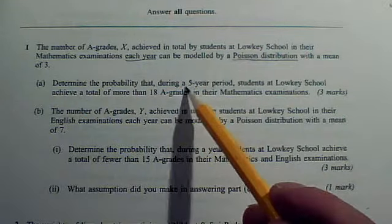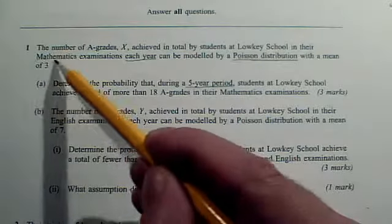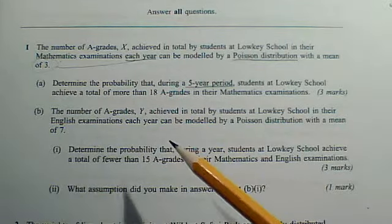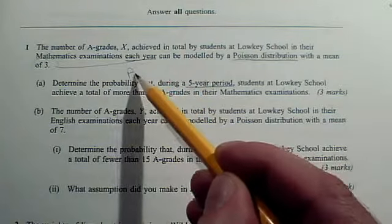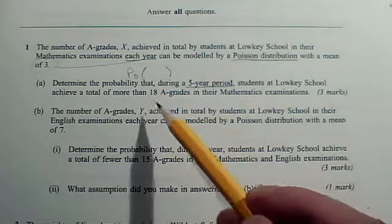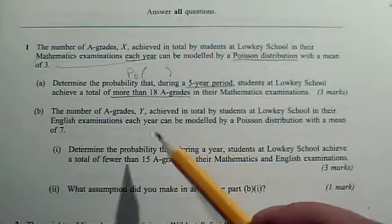In part A, we've got a five-year period, so the mean that applied to each year needs to be adjusted. You need to set up a suitable Poisson distribution with an adjusted mean, and then use the fact that we need more than 18 A grades.